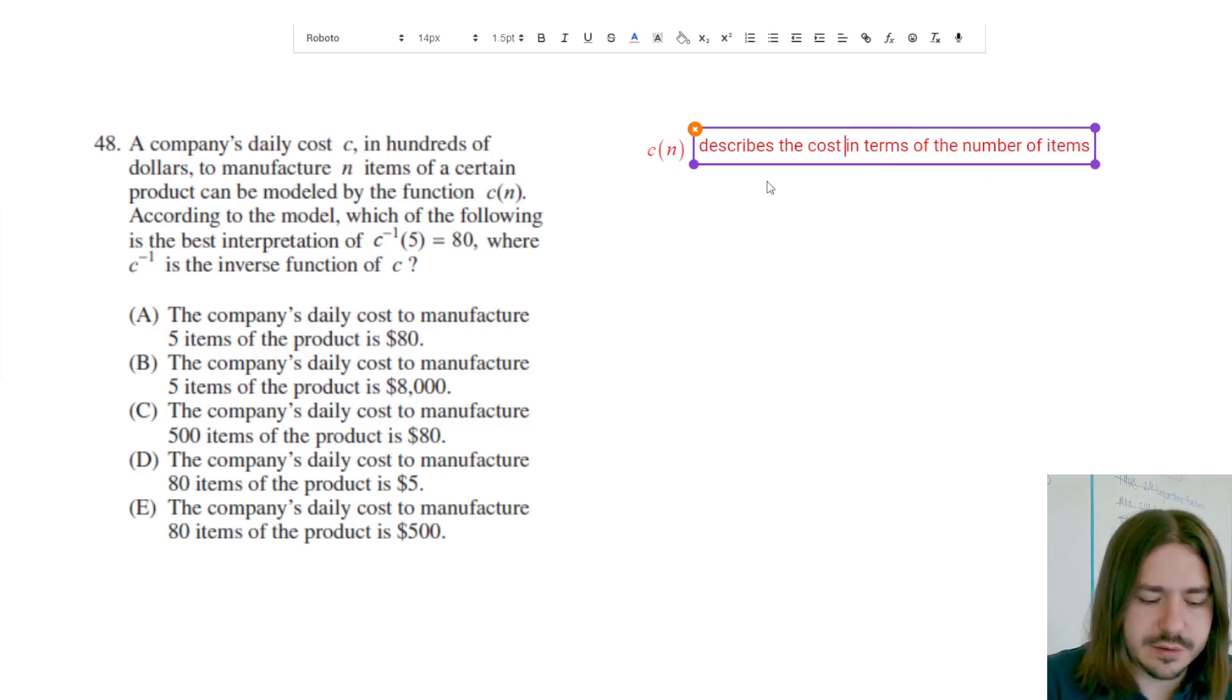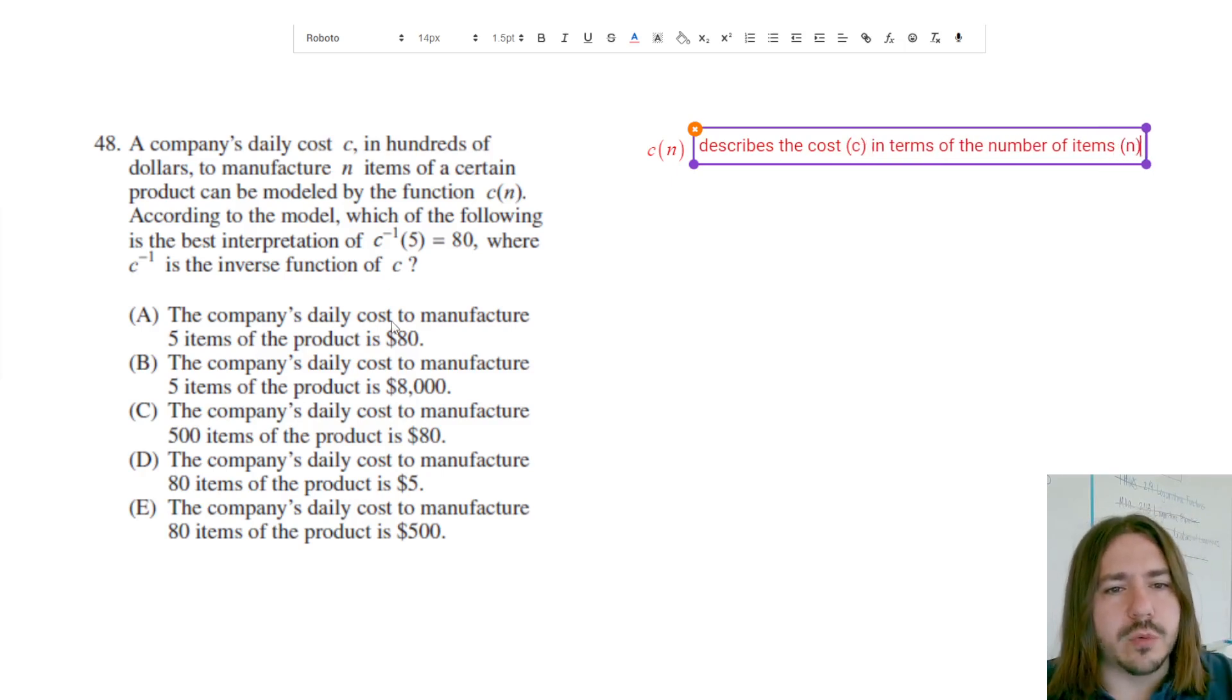According to the model, which of the following is the best interpretation? When you see this little negative one in front of a function, that typically indicates the inverse. So the inverse of C, C^(-1)(5) = 80, where C inverse...